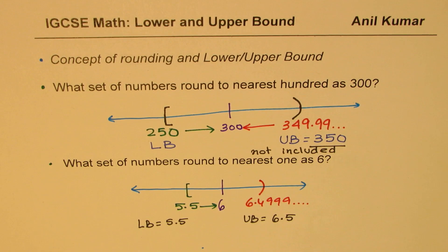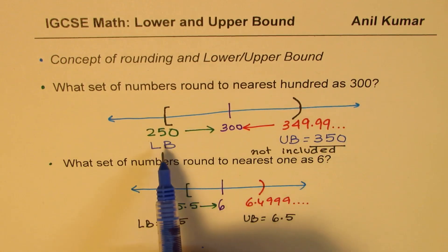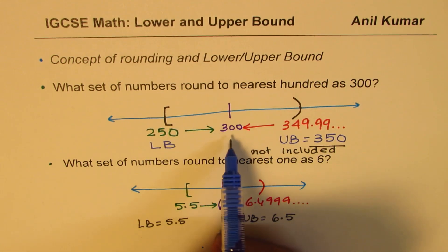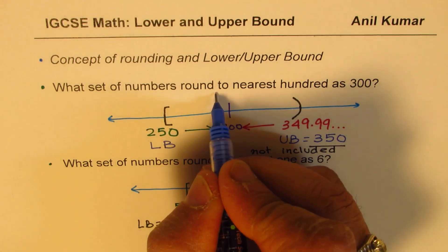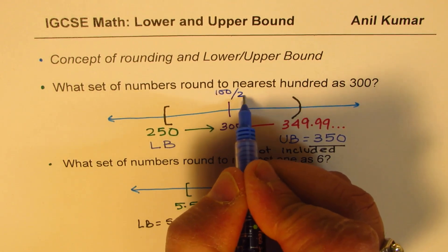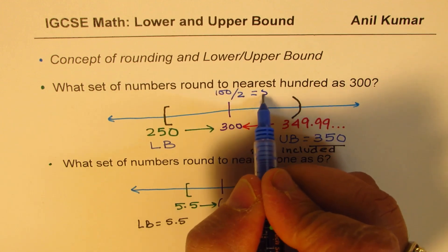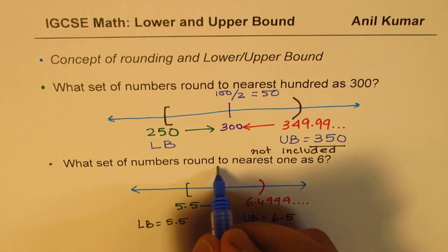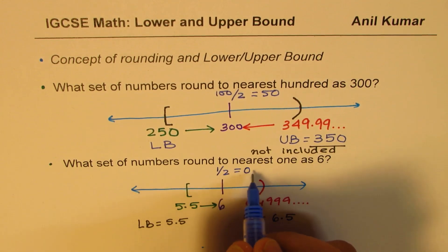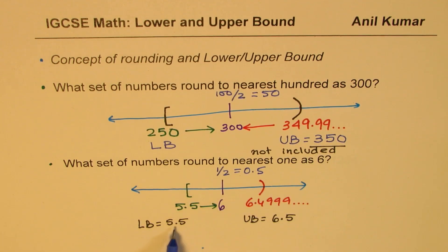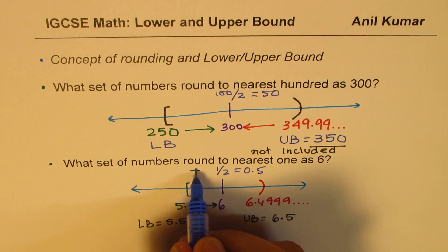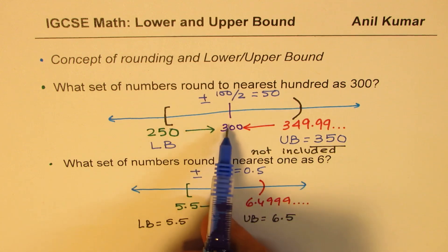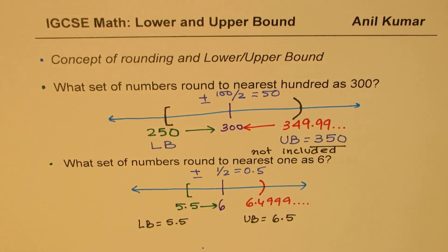Let's also discuss how we decide on adding or subtracting 50 or 0.5. In the first case, we are rounding to 100s, so we do 100 divided by 2, which equals 50. In the second case, we are rounding to the 1s place, so we divide 1 by 2 and get 0.5. That is how we decide what numbers should be added and subtracted to get the upper and lower bound.